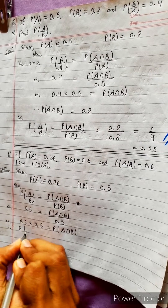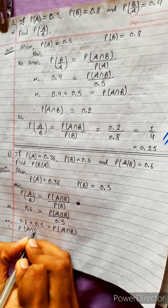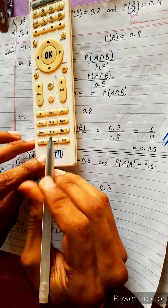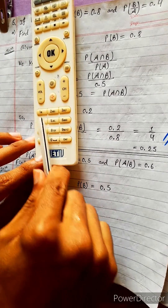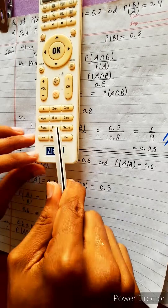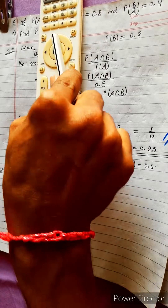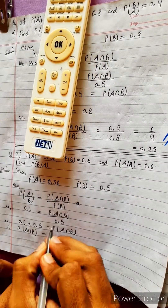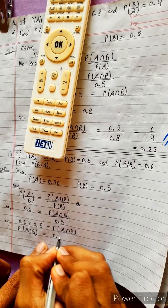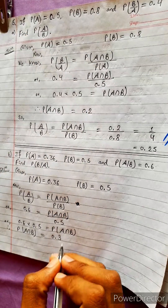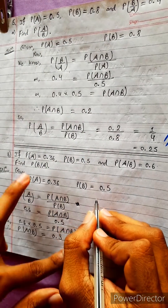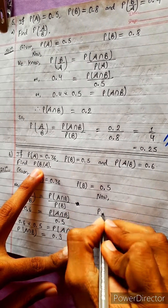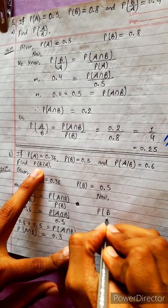Therefore, P(A intersection B) equals 0.6 multiplied by 0.5, which equals 0.3.